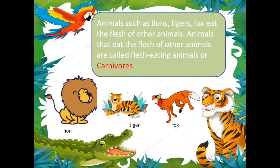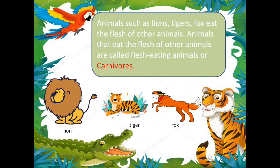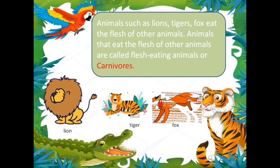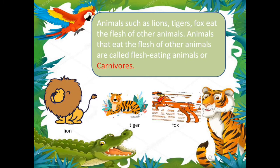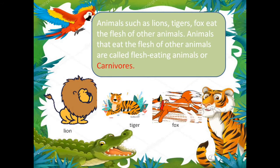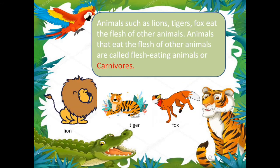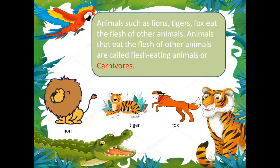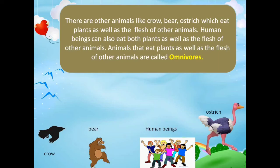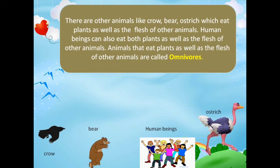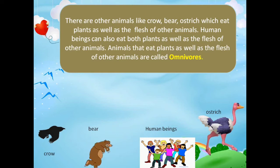Their basic food is the meat or the flesh of other animals and they feed on the flesh. Next we see another category — that is called Omnivores.